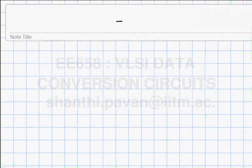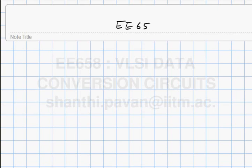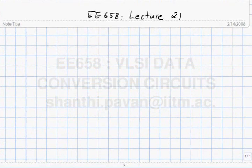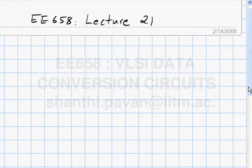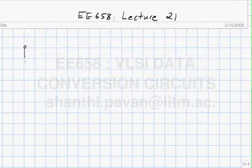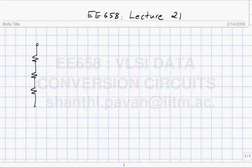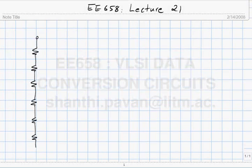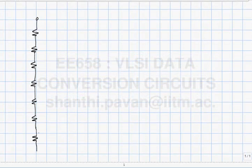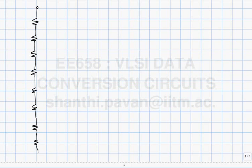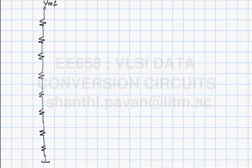Alright, so this is E658, Lecture 21. Yesterday we started our discussion on flash ADC converters. The basic idea is quite straightforward, as we saw in a three-bit example. One way to generate the thresholds required for the 7 comparators is to use a resistor string.